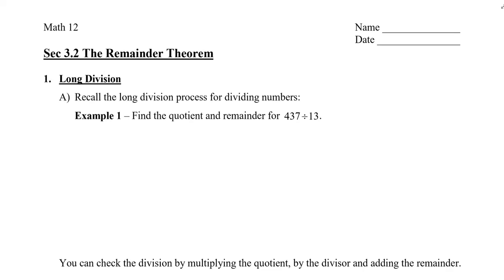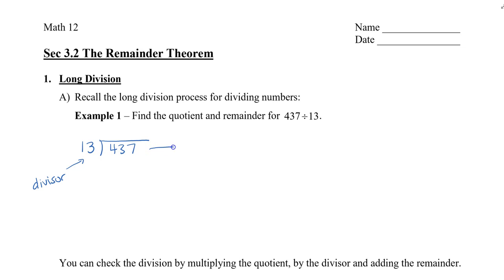In this video, we're going to take a look at long division, and then later how it links to the remainder theorem in another video. So to start with long division, let's say that we take a look at 437 divided by 13. We draw 13 to the left of the long division symbol, and we place the number 437 inside. So 13 is called our divisor, and the 437 is called the dividend.